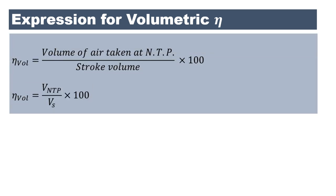Volumetric efficiency is defined as the ratio of the volume of air drawn in at normal temperature and pressure to the stroke volume, multiplied by 100: η_v = (V_NTP / Vs) × 100. These are the various formulas used in IC engine analysis. Thank you very much for watching.